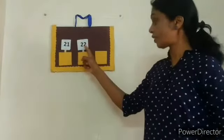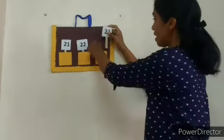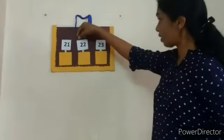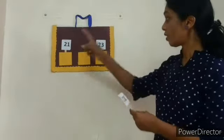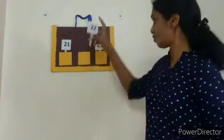Now what is the after number of 22? That is 23. So I will put this 23 number in the last pocket. Now if I remove this, so what is the between number of 21 and 23? That is 22.